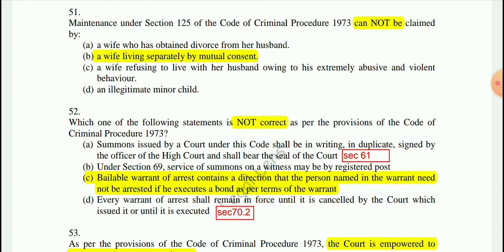Question 52: Which statement is not correct as per CrPC 1973? The wrong statement is C — a bailable warrant of arrest contains a direction that the person named in the warrant need not be arrested if he executes a bond as per the terms of the warrant. Options A, B, and D are correct: warrants shall be in writing, in duplicate, signed by the officer of the High Court, and bear the seal of the court, as mentioned in Section 61.